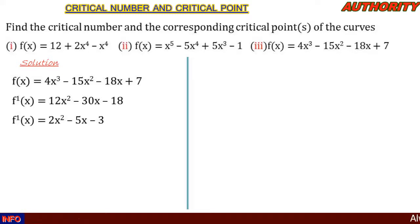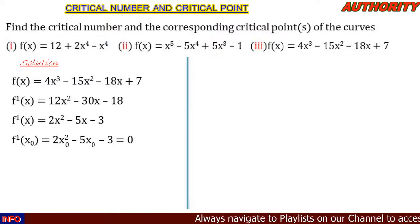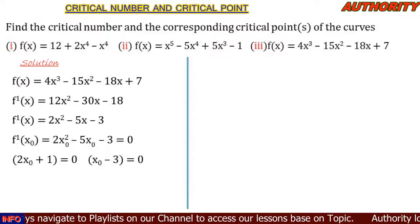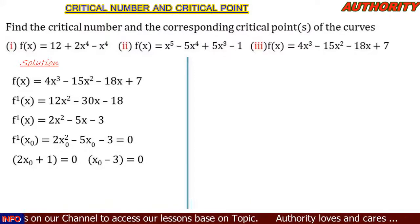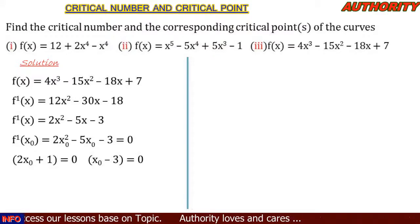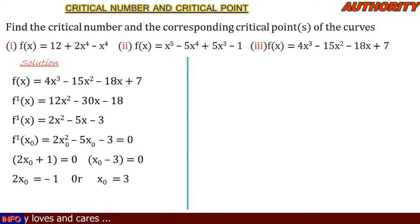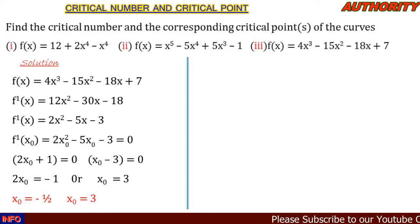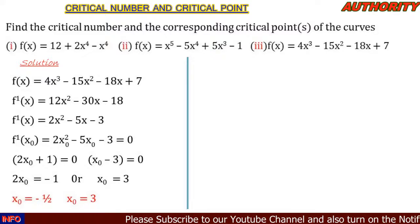We replace x with x₀ and equate to zero: 2x₀² - 5x₀ - 3 = 0. Factoring gives (2x₀ + 1)(x₀ - 3) = 0. So 2x₀ + 1 = 0, giving x₀ = -1/2, and x₀ - 3 = 0, giving x₀ = 3. The two critical numbers are x₀ = -1/2 and x₀ = 3.